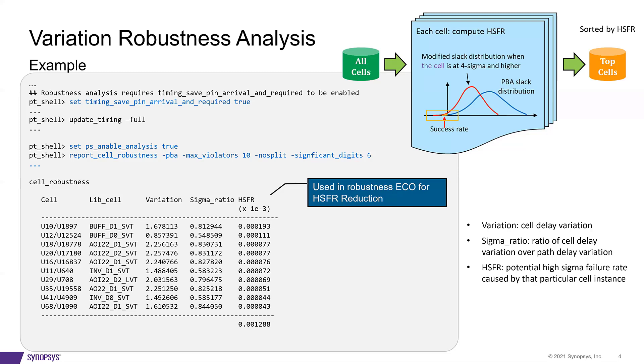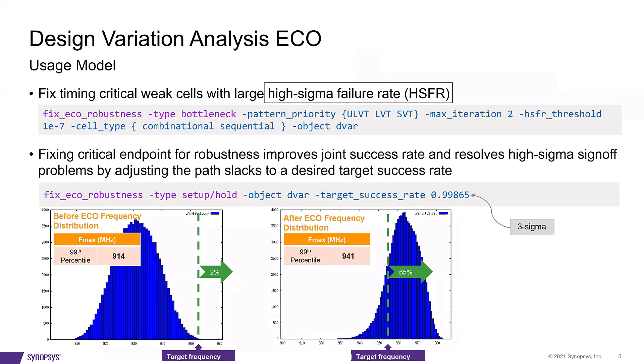And then, let's move on to focusing on how to fix these top cells with largest HSFR using fixed ECO robustness, as shown in the example.